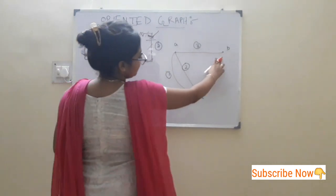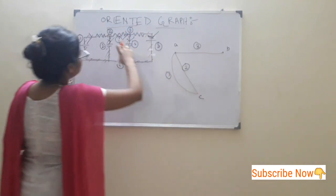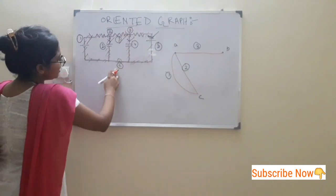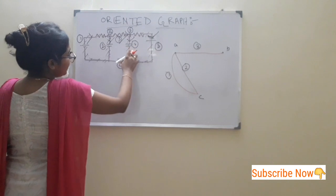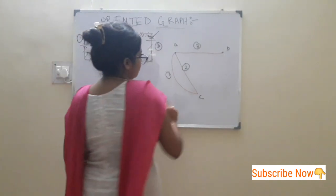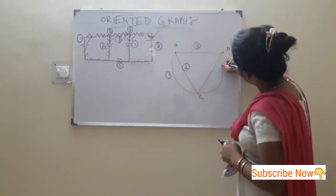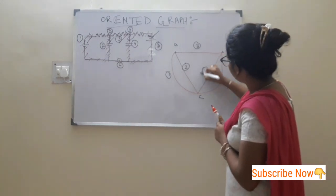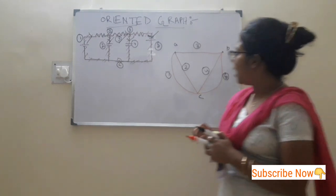Next, we have to draw the branches between node B and C. Between node B and node C, there are two branches: one is number 4 and one is number 5. So draw these two branches — this is number 4 and this is number 5.